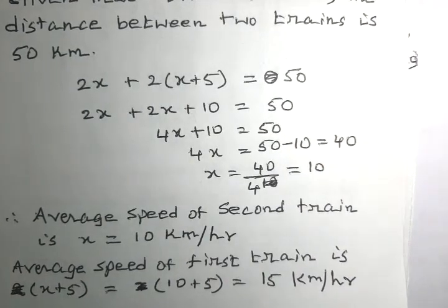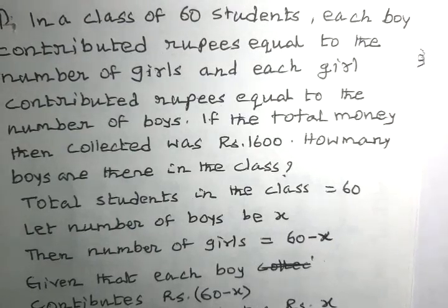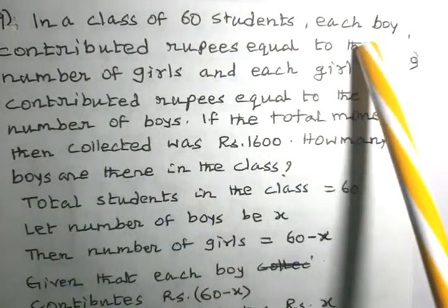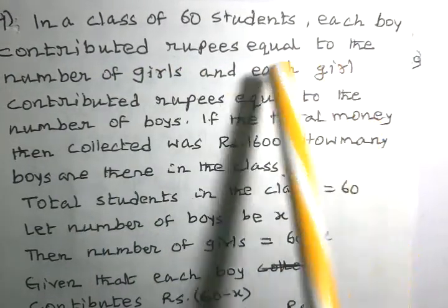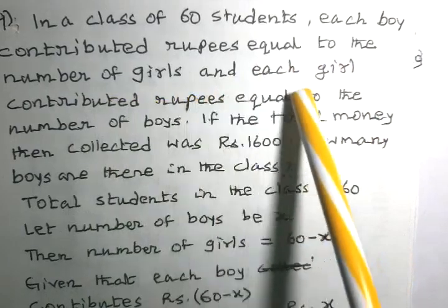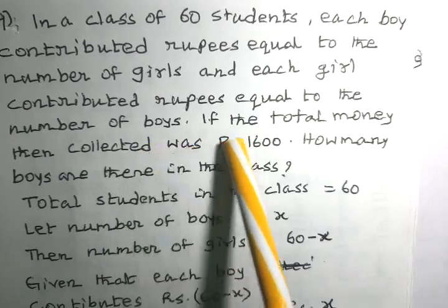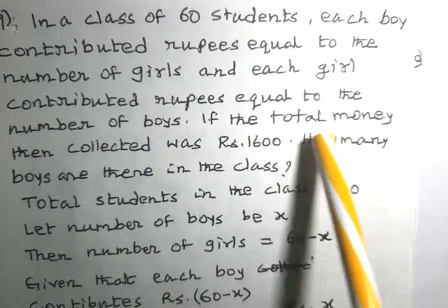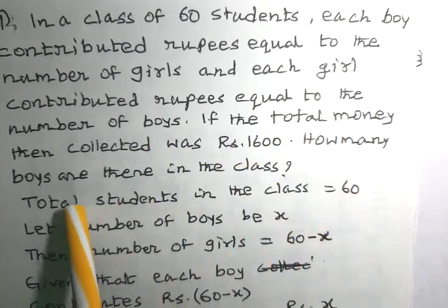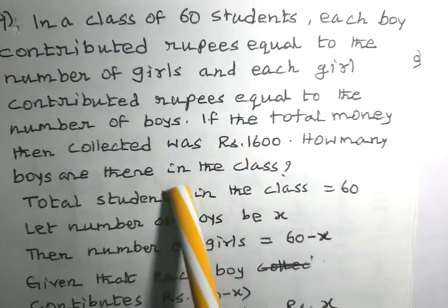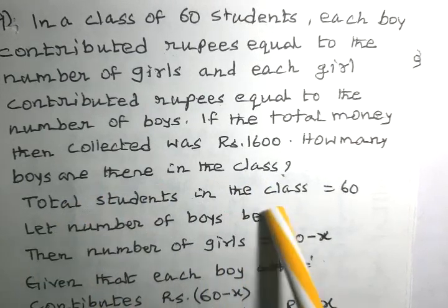Now we consider another problem. In a class of 60 students, each boy contributed rupees equal to the number of girls, and each girl contributed rupees equal to the number of boys. If the total money collected was rupees 1600, how many boys are there in the class? It is given that the total number of students is 60.